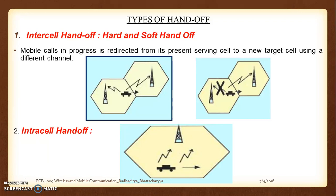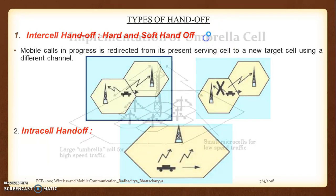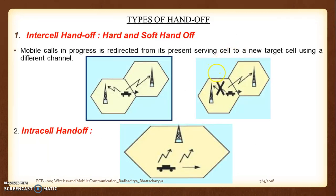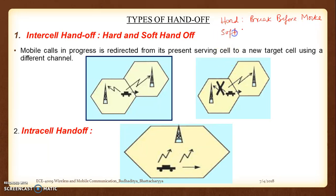We will cover the details of hard handoff and soft handoff. Hard handoff is when the user requires a handoff, breaks the established connection, and then connects to the new base station — this is called break before make. Soft handoff, on the other hand, is called make before break. We will discuss this in detail in the next lecture.